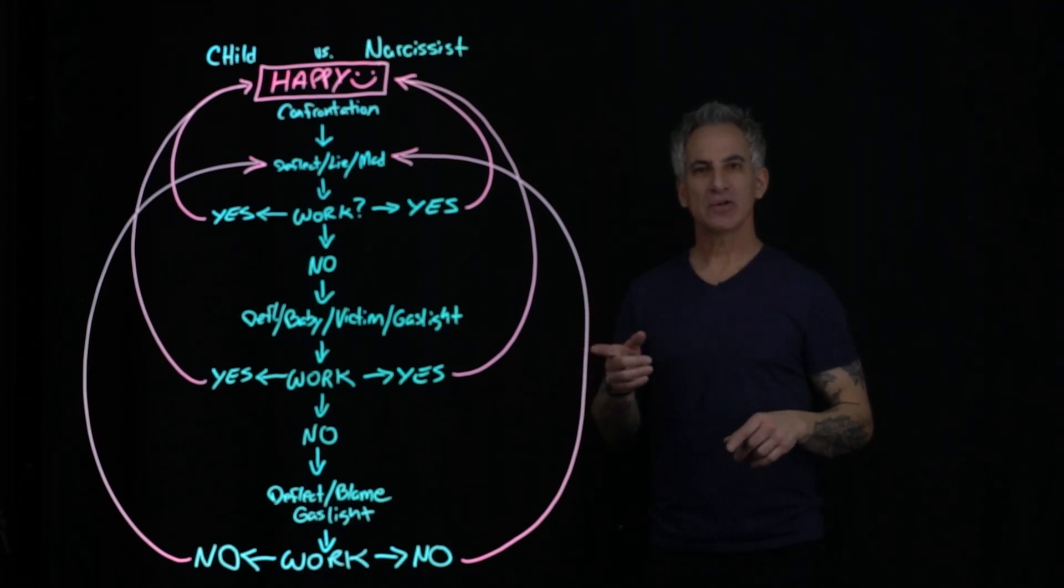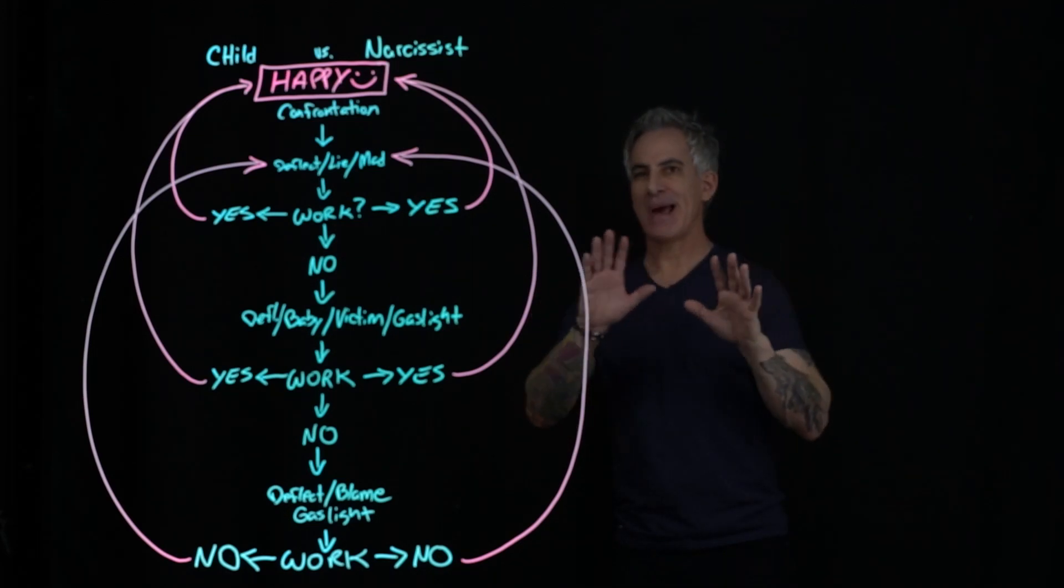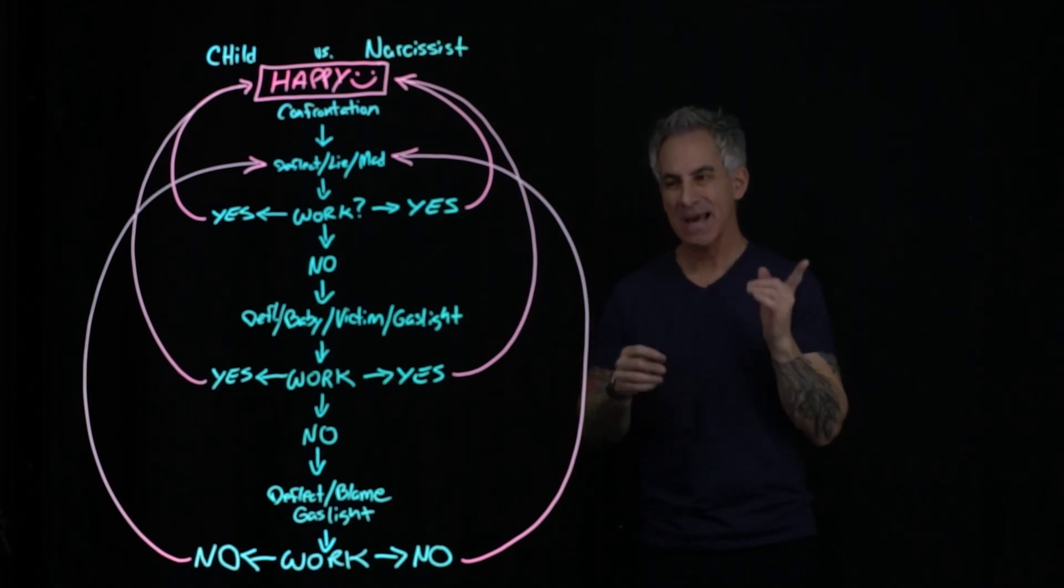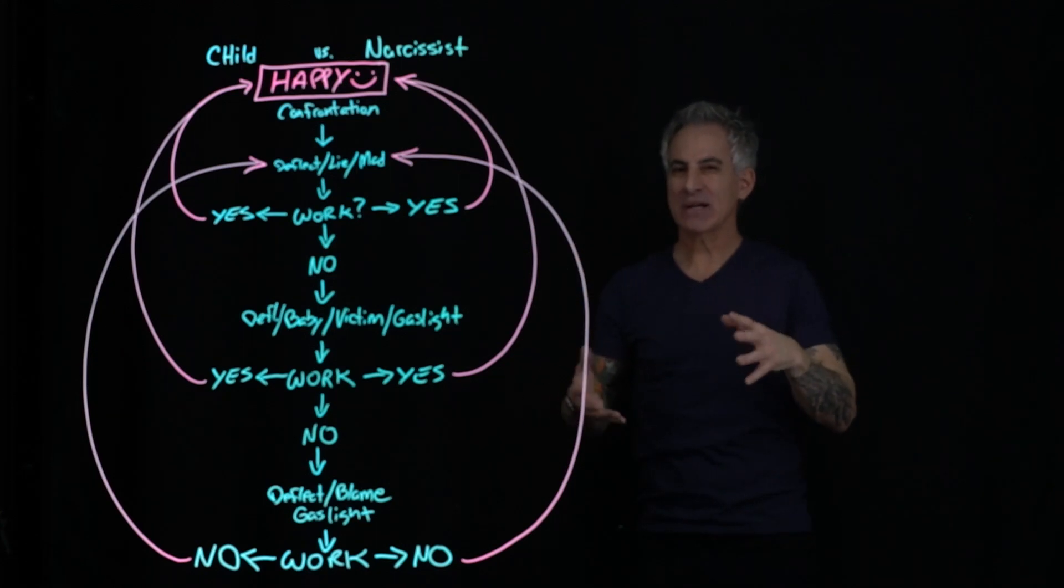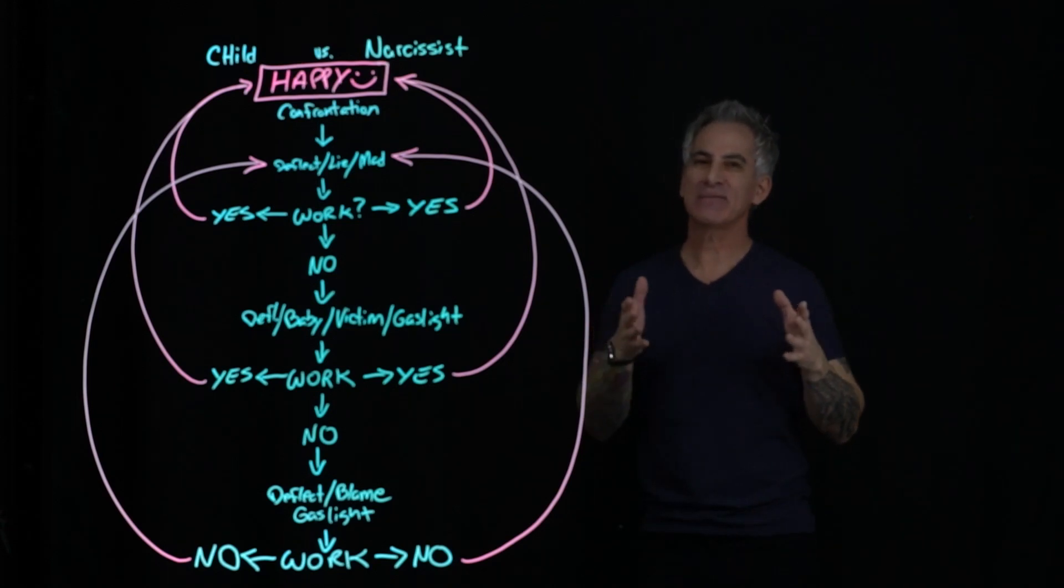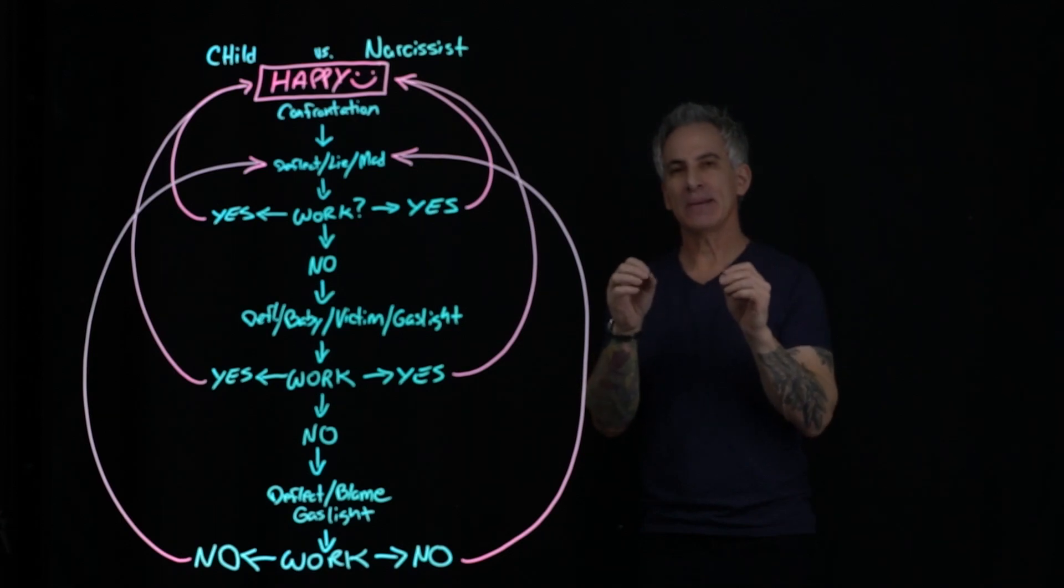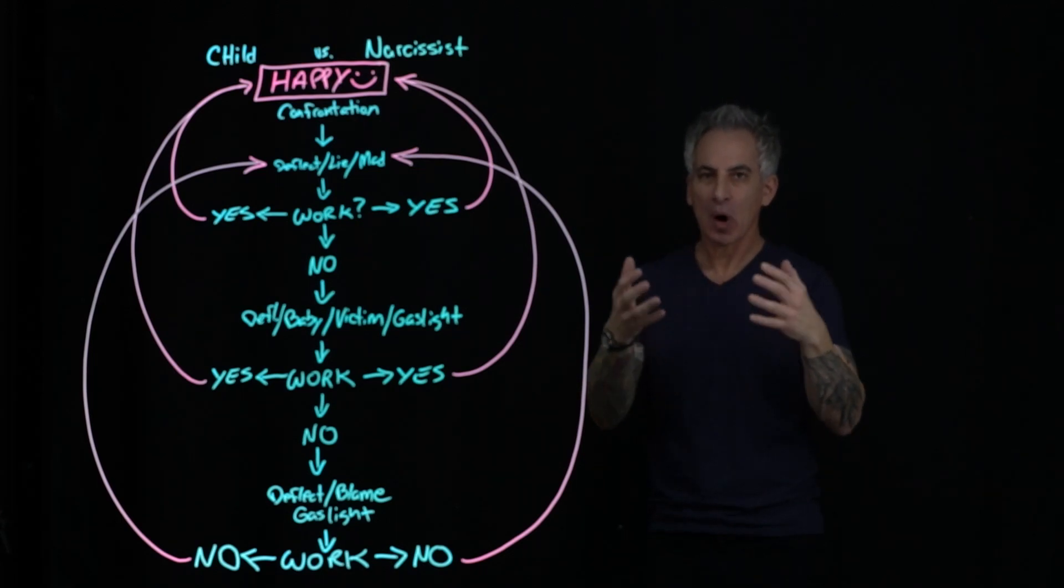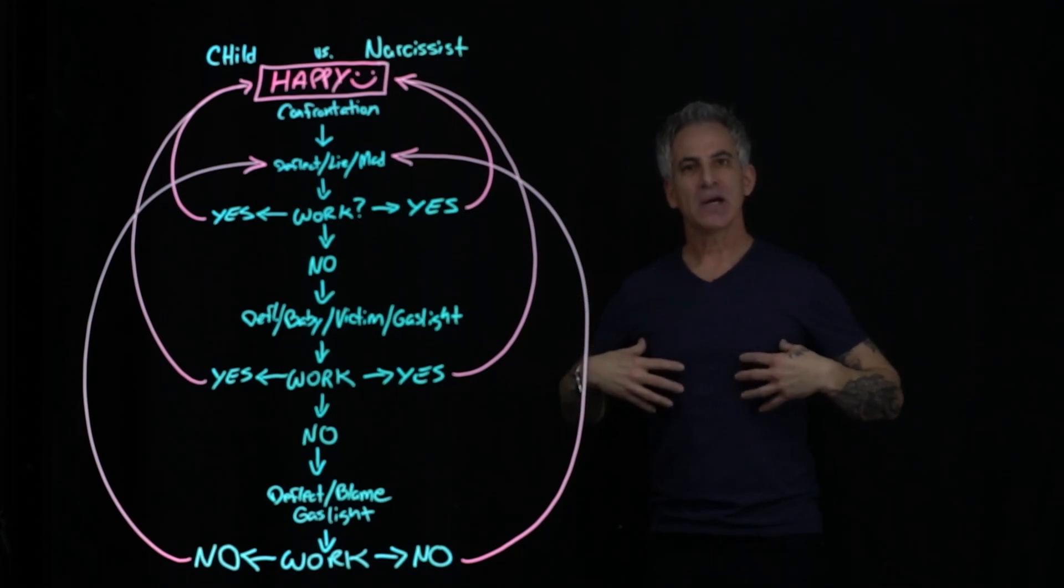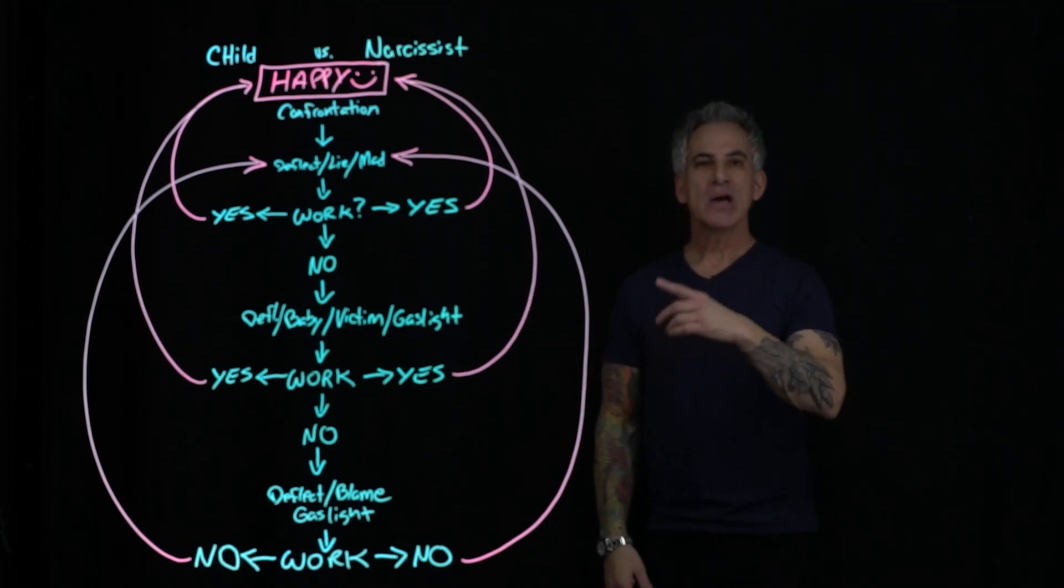But have you ever heard of the child versus the narcissist flowchart? You see, everyone thinks that narcissists are these bad, ugly, evil individuals. Well, actually it's the empaths who are all saying that. And all those empaths who think they have all those warm, fuzzy emotions and think they have so much feeling for the world, they actually have none. Because the true definition of empathy is the ability to handle and know their own emotions first. So the true definition of empathy is understanding of your own emotions and feelings.